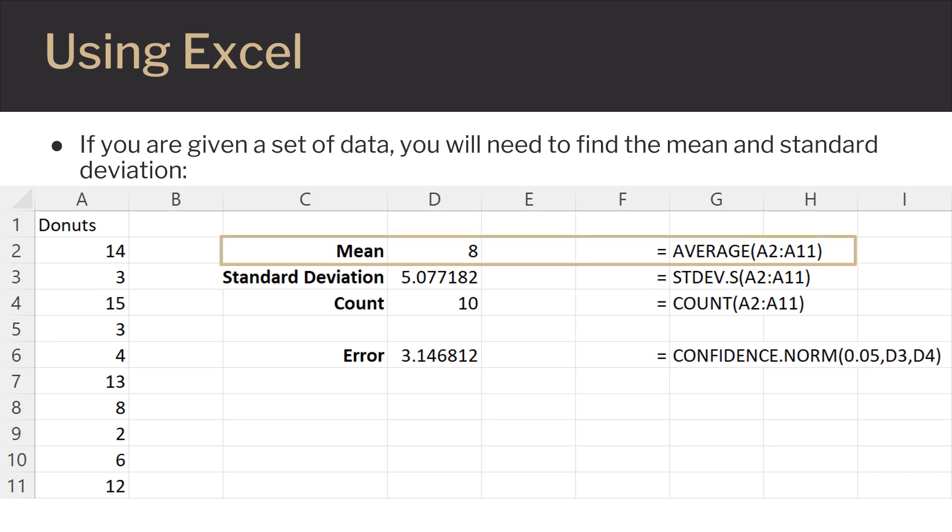So for mean, you will type equals average, open parentheses, select all of your data, and then close your parentheses.